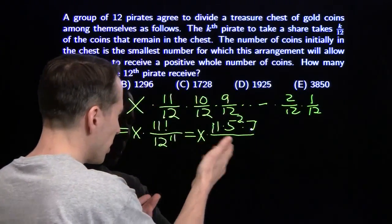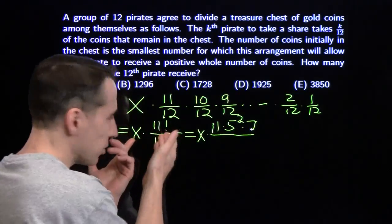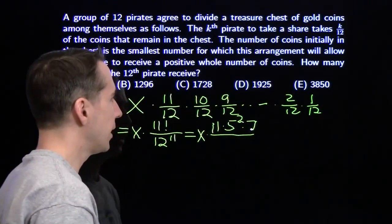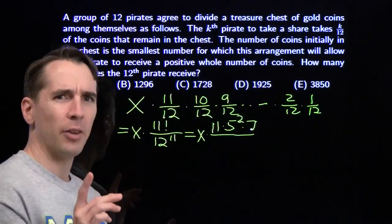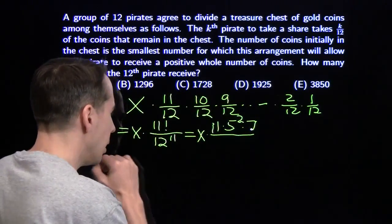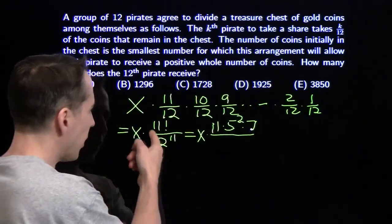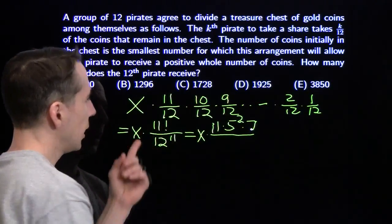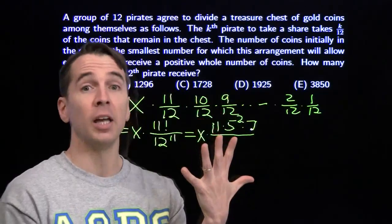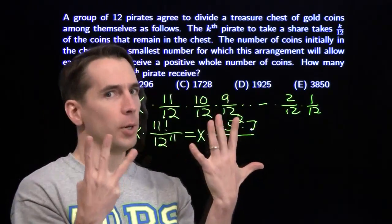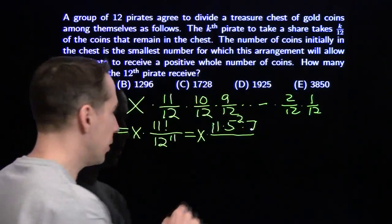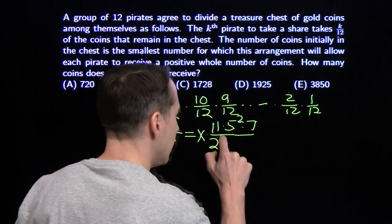We simplify the fraction by taking out factors of 2. The number of factors of 2 in 11 factorial: you get 2, 4, 6, 8, 10 — that's 5 — plus an extra one from the 4, and two extra from the 8, giving 8 factors of 2 in the numerator. There are 22 in the denominator, leaving 2 to the 14th.